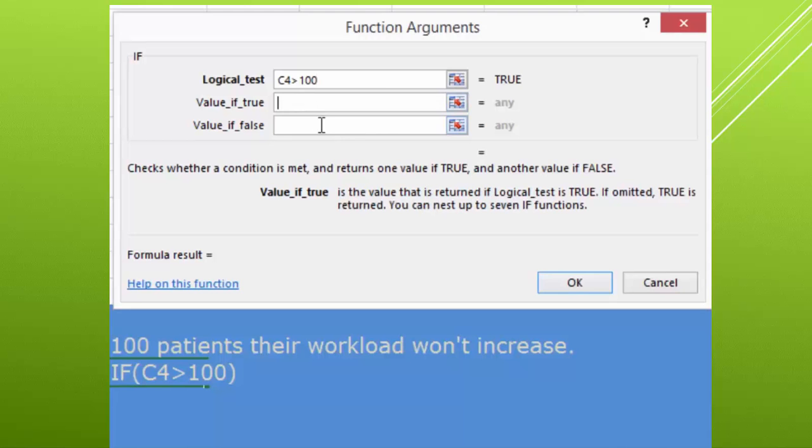If it's greater than 100, just return that same value. They don't get an increase. If it's false, that means they have to have the value times the percentage increase. And we're going to make that an absolute value. Just make that an absolute value there. And we'll close that off, and then add in the original value.